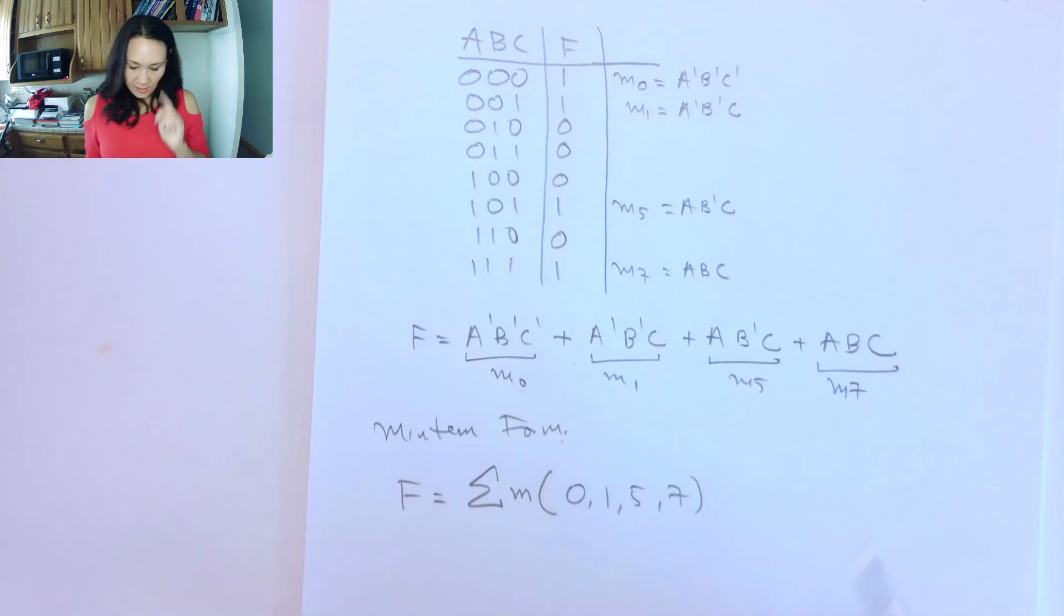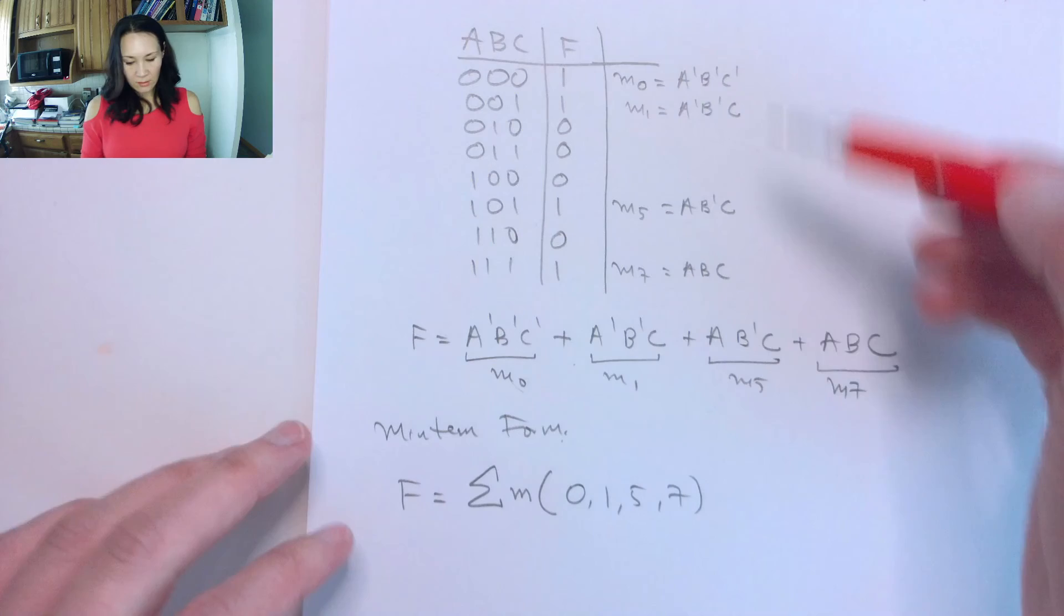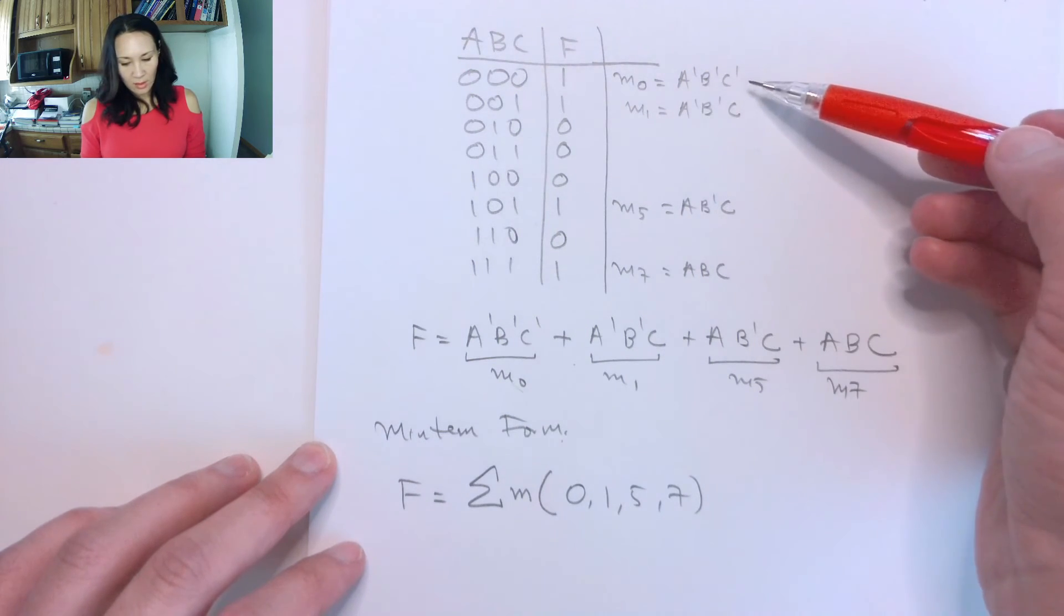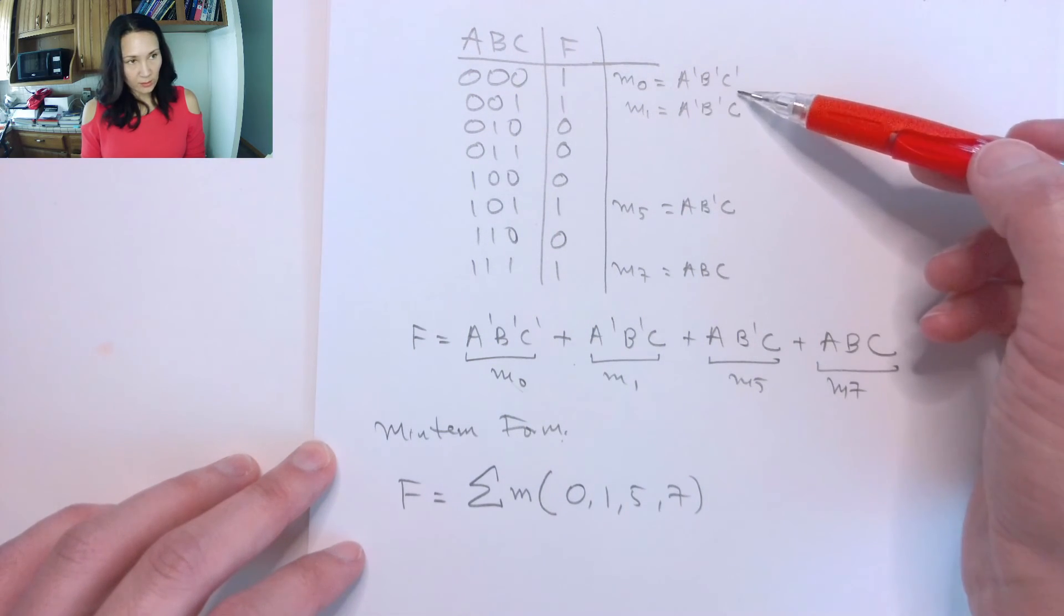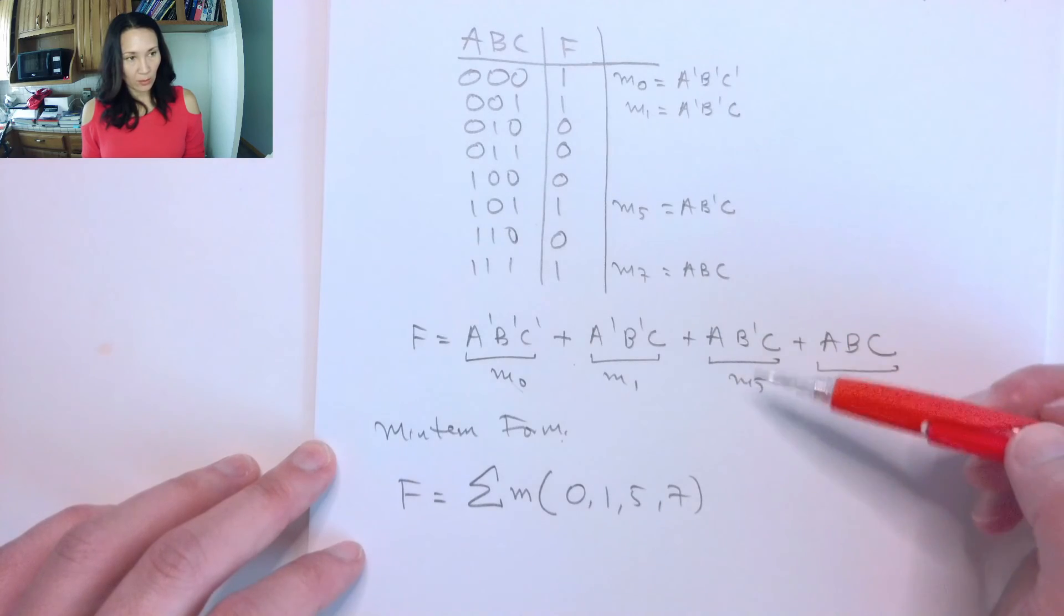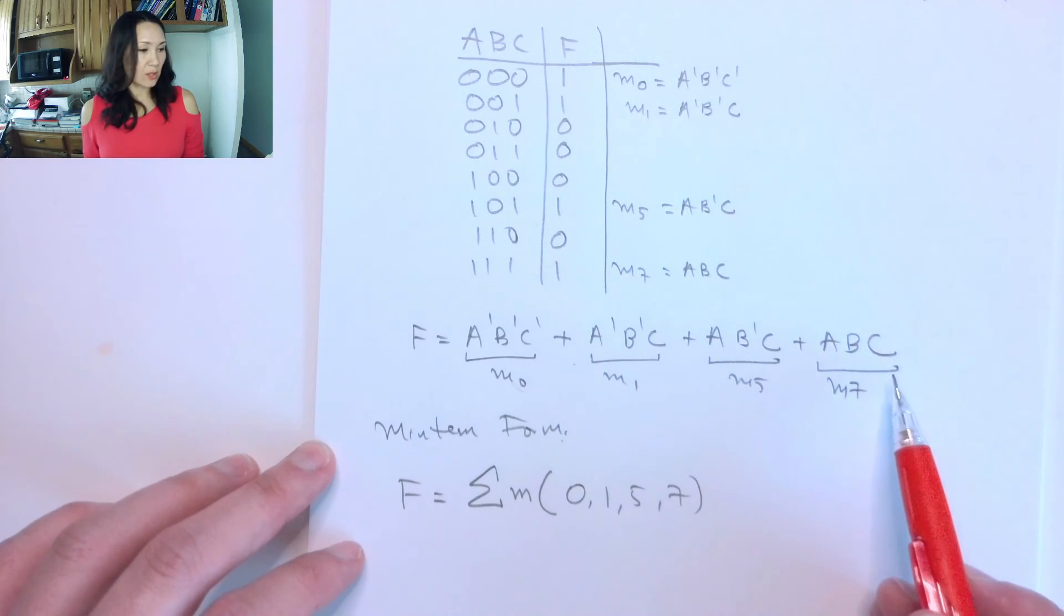So if you see a notation like this, where you have a sum and then a little m and then a list of numerals, you know that you need to find on the truth table which min-terms, which literals correspond to the min-term number, and then you can write all those out, and you'll have your function.